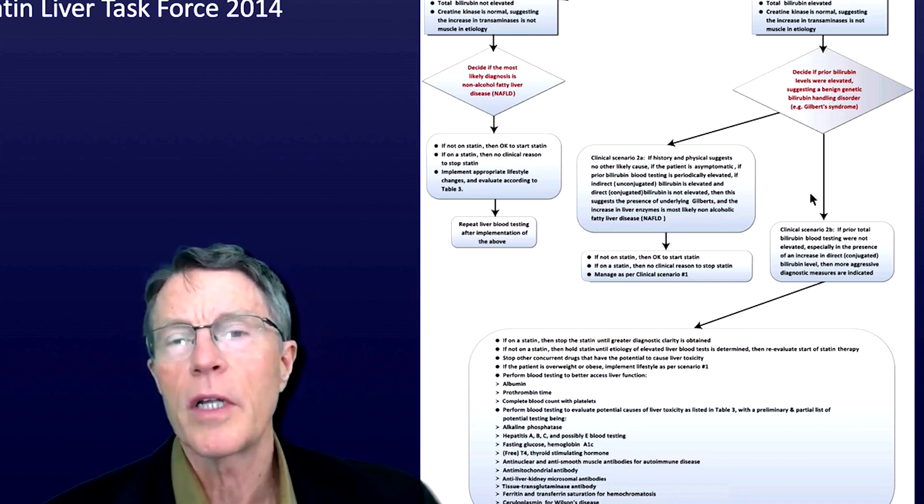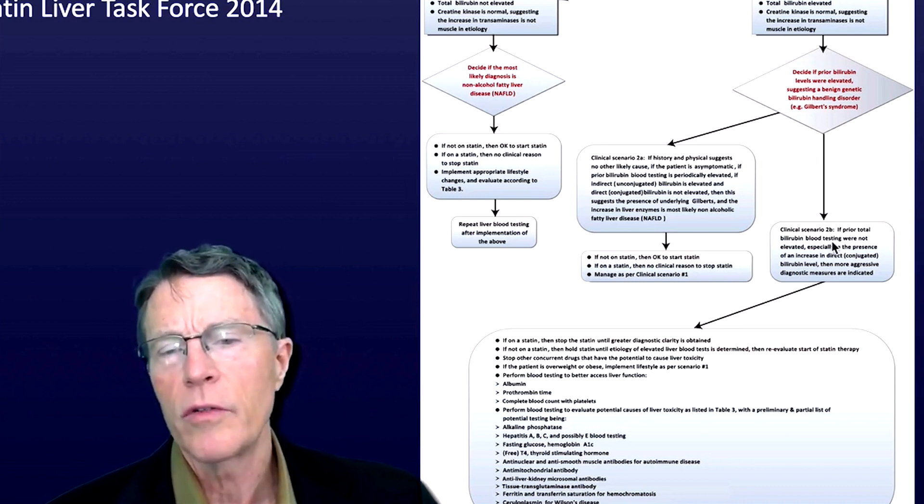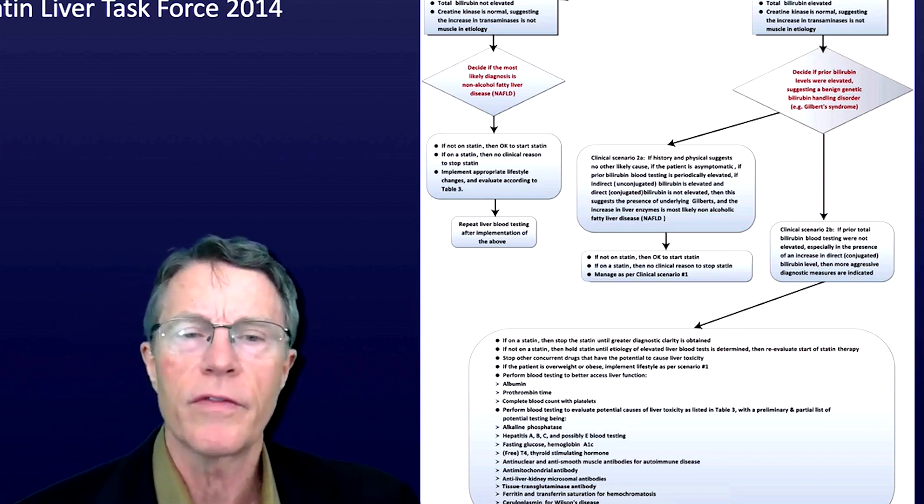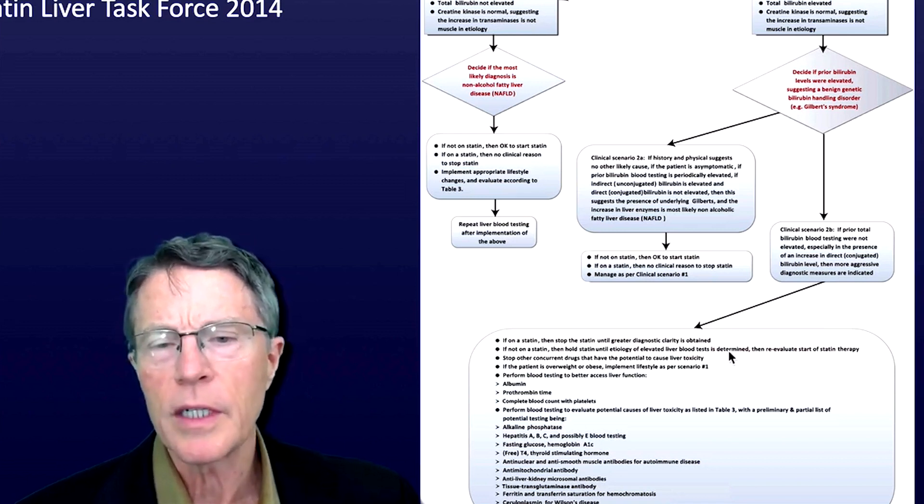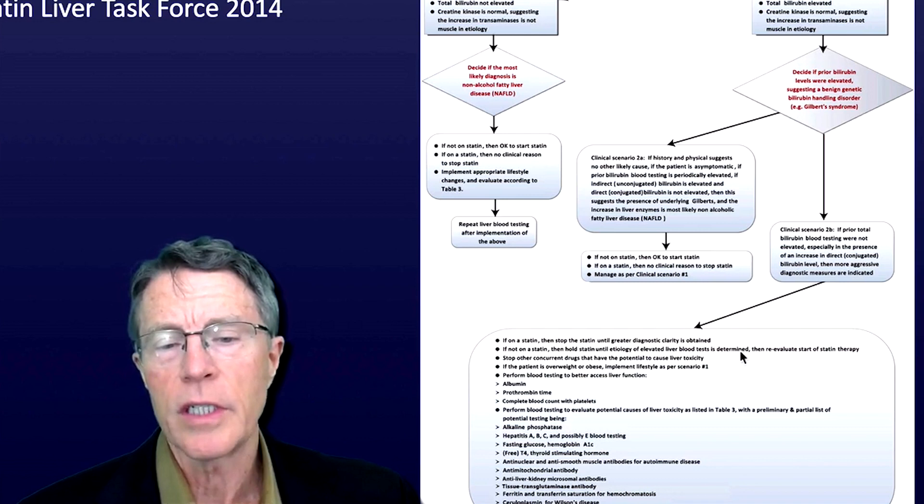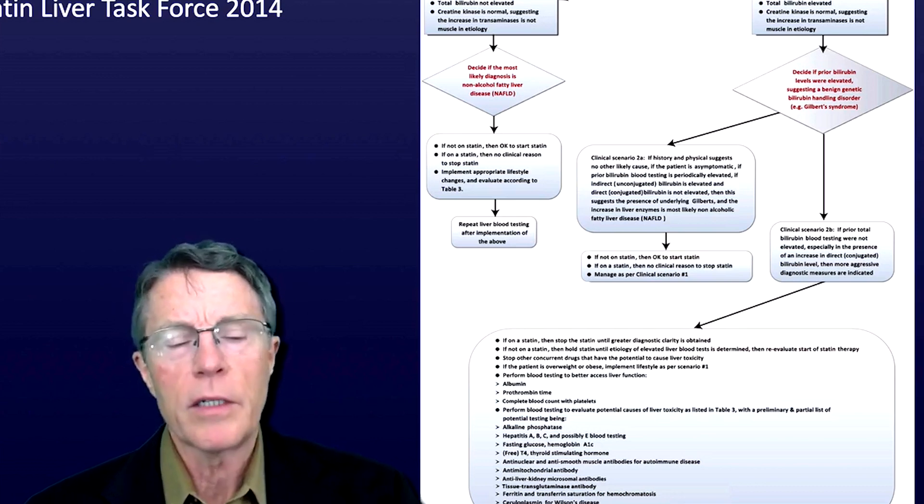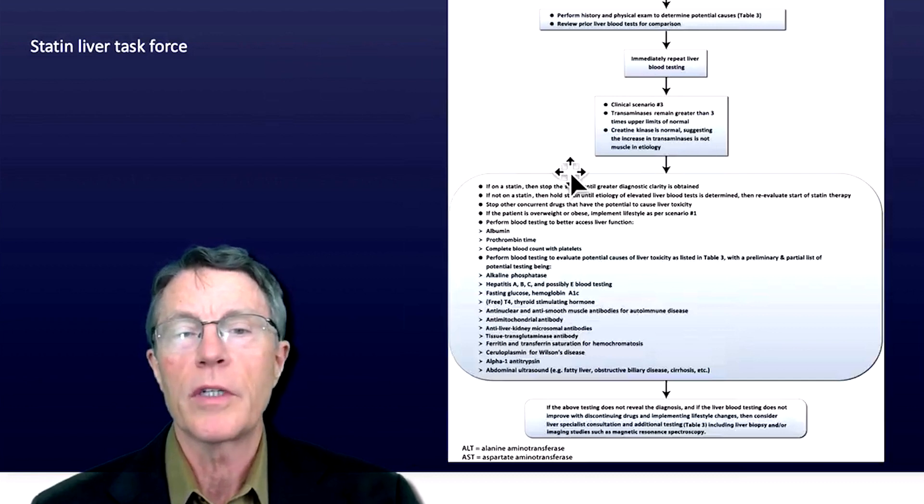Here's the only place where you would say, okay, ALT and AST are less than three times the normal limits, but let's hold off. If the bilirubin has elevated as a result of taking the statins, that's pretty unusual. But again, stop the statin at that point and take a look to see, get a little bit more clarity regarding what's going on with the bilirubin. So that's bilirubin and AST and ALT less than three times the upper limit.